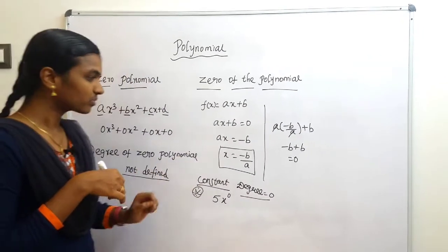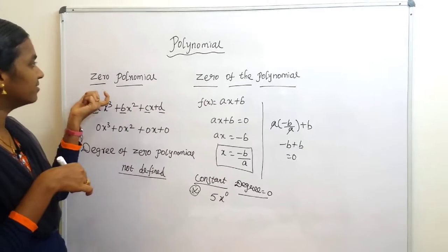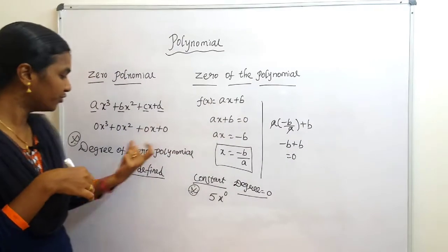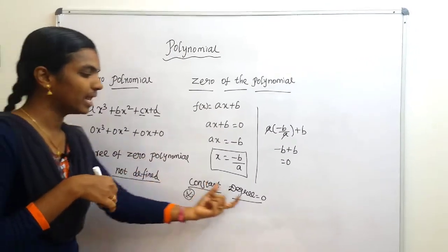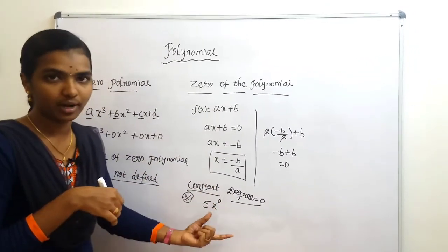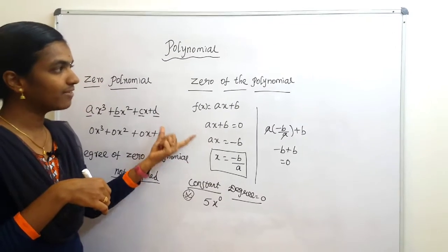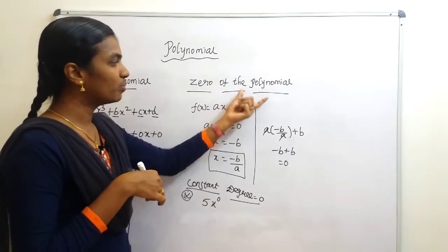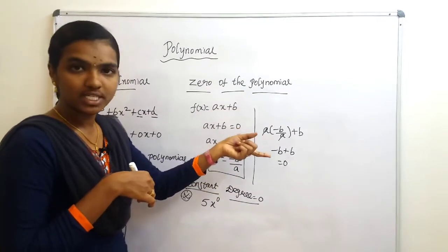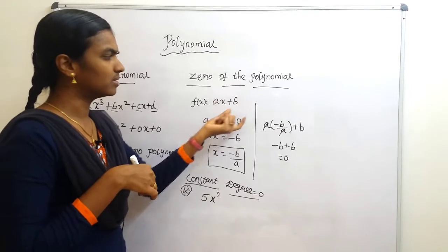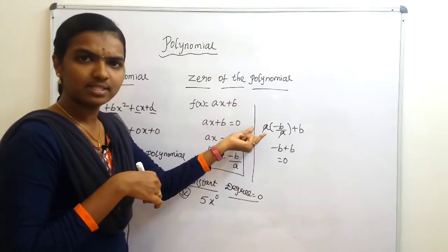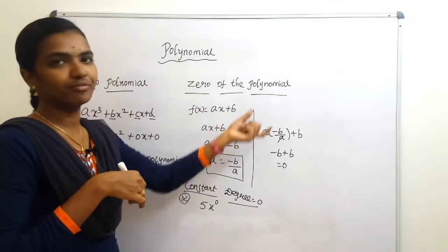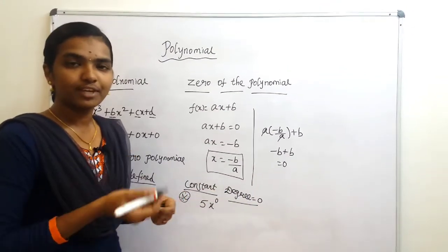I hope you understand today's concept: the difference between zero polynomial and zero of the polynomial, and how to find the degree of the zero polynomial and the constant polynomial. If you have any doubts, post them in the comment box. Also try it yourself — take a quadratic expression like 2x + 3 and find the zero of the polynomial.